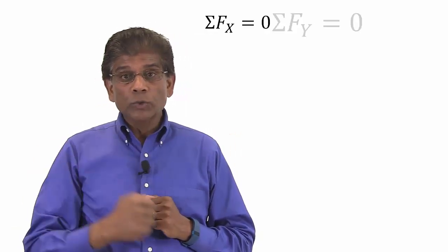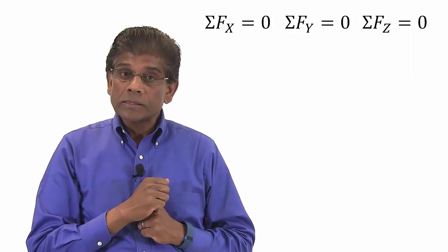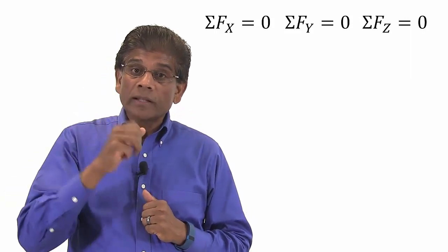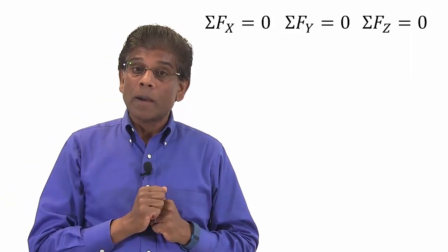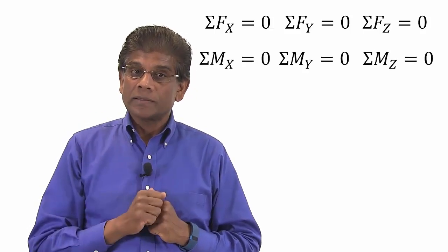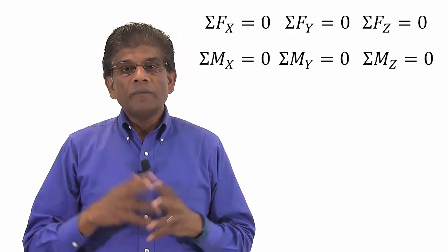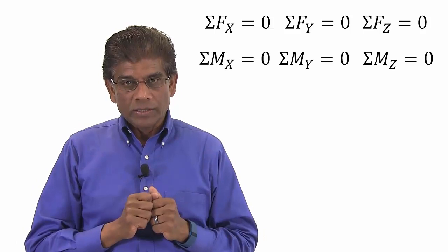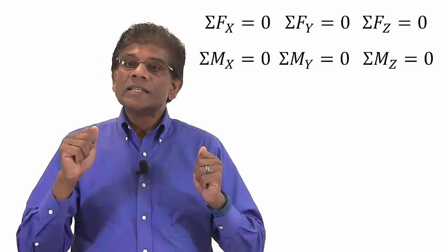Now, we are going to study the most general case of three-dimensional rigid body equilibrium. As you can imagine, in this case, we can write three equations summing up all the forces along x, y and z axis. And we can also write three more moment equations about x, y and z axis. So, in total, we will have six scalar equations and we can solve for six unknowns.